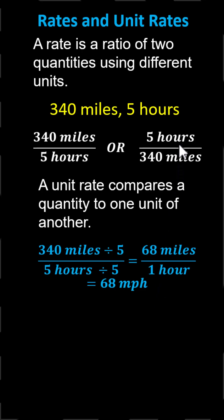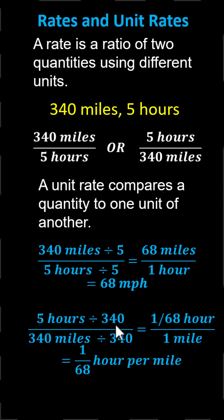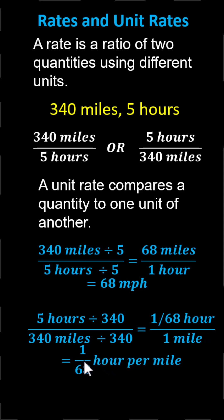For the rate of 5 hours per 340 miles, we want 340 miles to be 1 mile. Therefore, we divide both 5 and 340 by 340. Notice 340 miles divided by 340 is equal to 1 mile, and 5 hours divided by 340 simplifies to 1 divided by 68, giving us 1/68 of an hour. Therefore, the unit rate is 1/68 of an hour per mile.